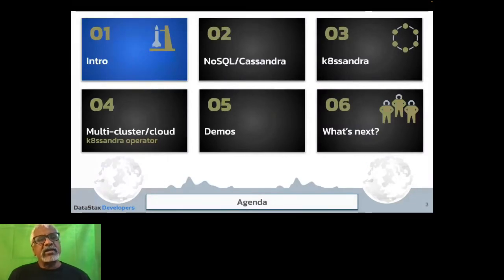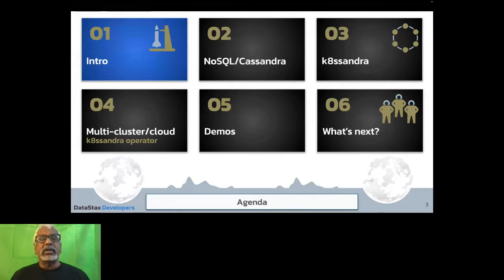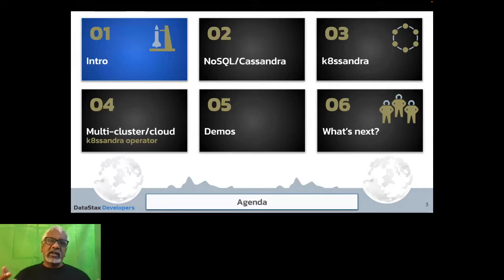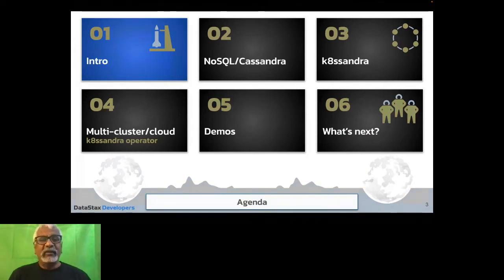The agenda for today: I'll do a quick intro and talk about NoSQL. It has a lot to do with the cloud — it's really about horizontal scaling and being able to provide the durability and resilience that are typical cloud properties. There was the cloud before there was the cloud — that's kind of how I put Cassandra. Then K8ssandra, or sometimes called Katsandra, is the Kubernetes version of Cassandra — Cassandra on top of Kubernetes.